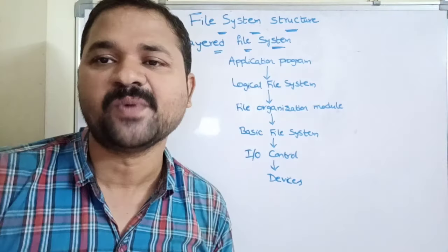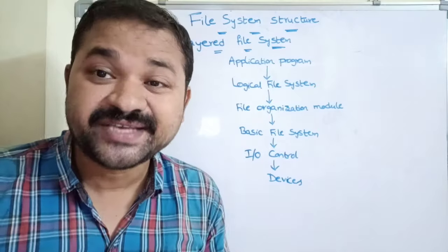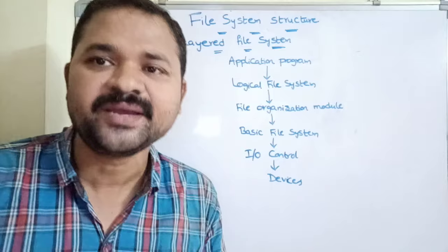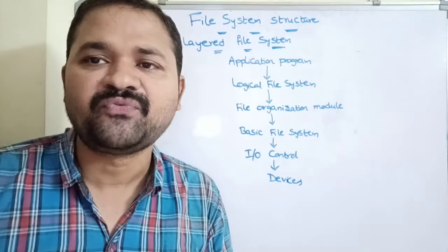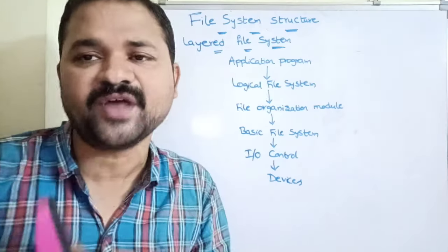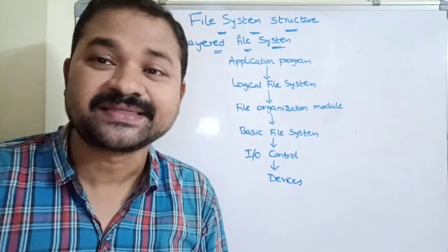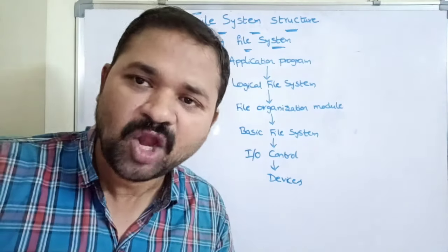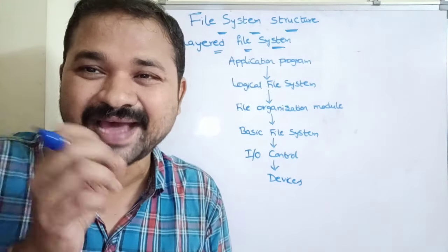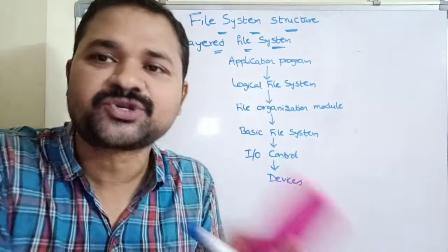That logical block number is given as input to the file organization module. The file organization module accepts the logical block number as input and performs a mapping or translation scheme to find the physical block number where the file is stored on the hard disk. The physical block number specifies the exact block number where the file is stored on the hard disk.